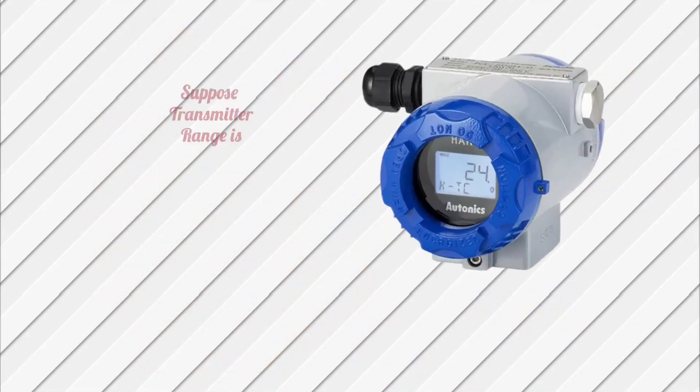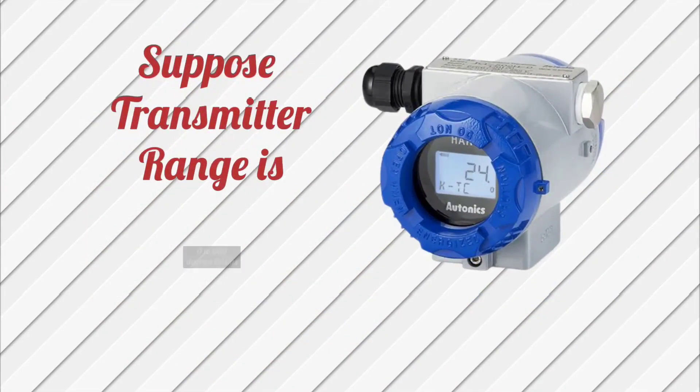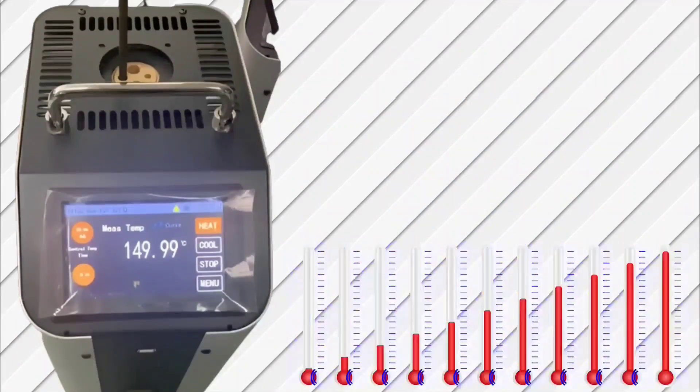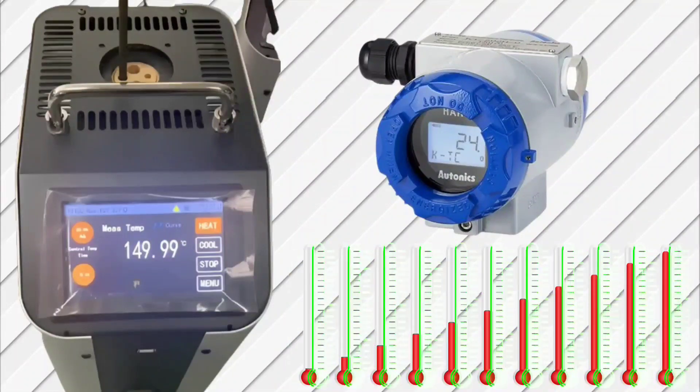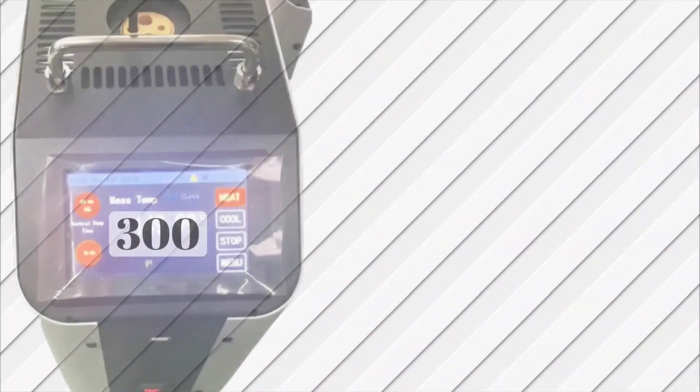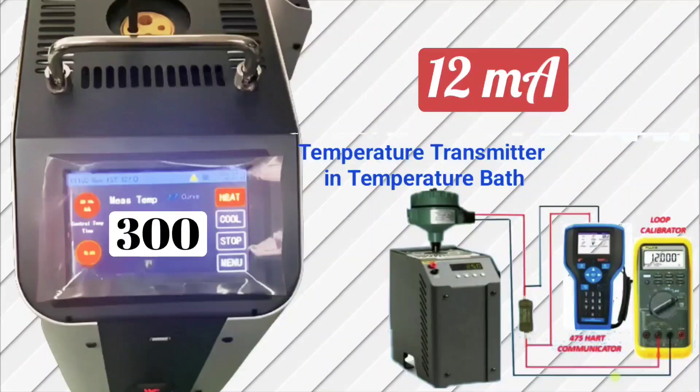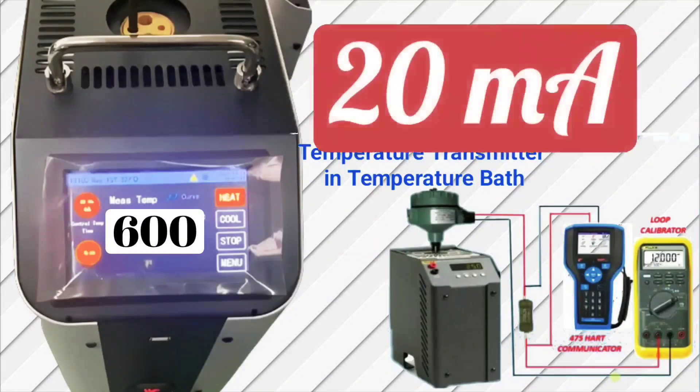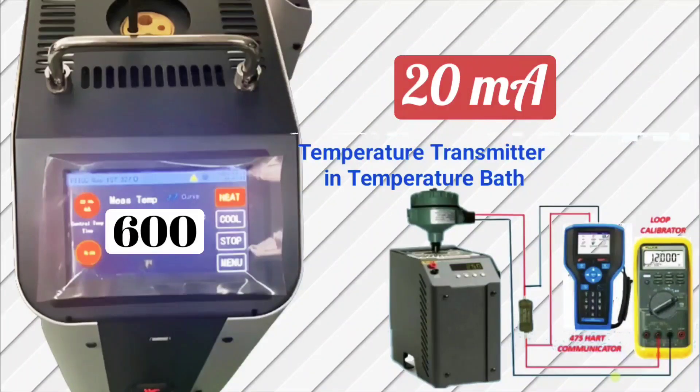Suppose the range of transmitter is 0 to 600 degrees Celsius. At different temperatures, we will check what will be its output. Like at 300 degrees Celsius, the output should be 12 mA. At 600 degrees Celsius, the output should be 20 mA.